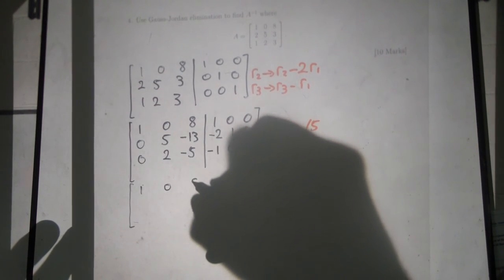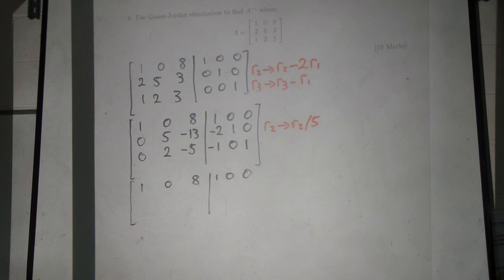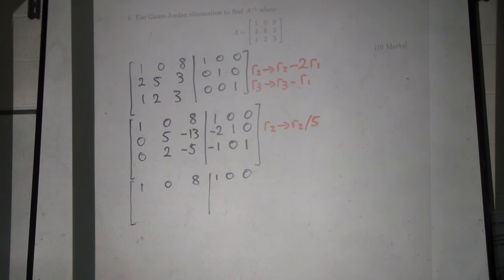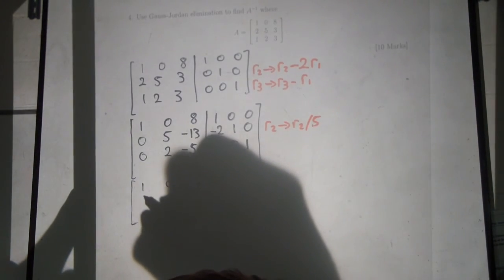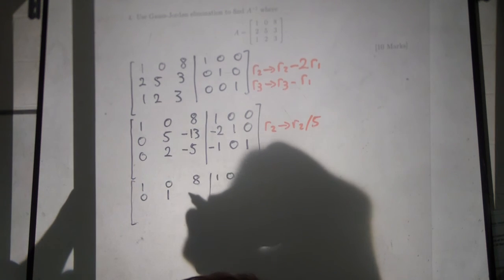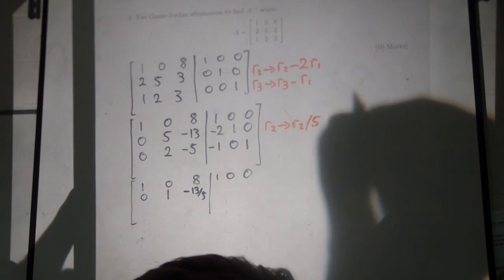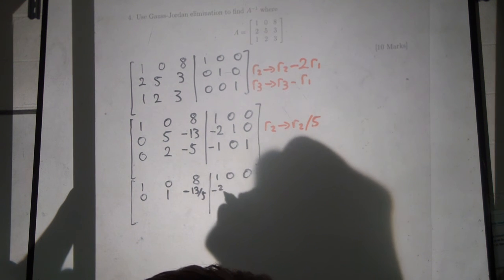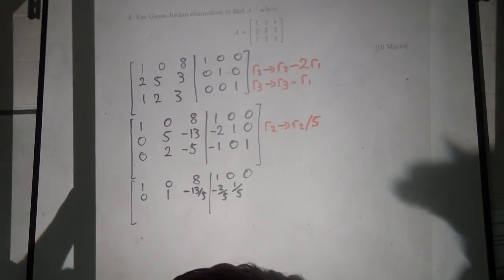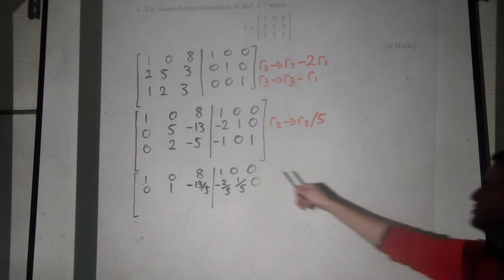We have 1, 0, 8, 1, 0, 0. I'm quite happy to have halves, thirds, fifths. If you get into messier fractions you've probably made a mistake, but you should keep going because you won't see the mistake. So: 0 divided by 5 is 0; 5 divided by 5 is 1; minus 13 divided by 5 is minus 13 over 5; minus 2 divided by 5 is minus 2 fifths; 1 divided by 5 is 1 fifth; 0 divided by 5 is 0. Now you can attack the 2 using this row.